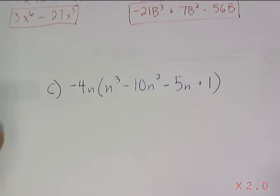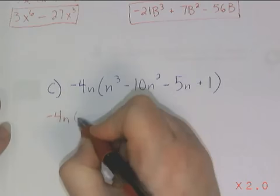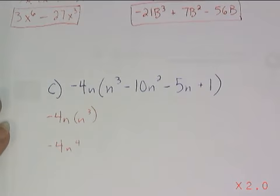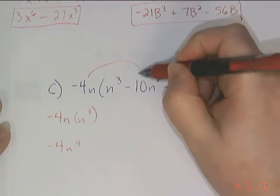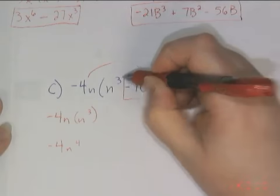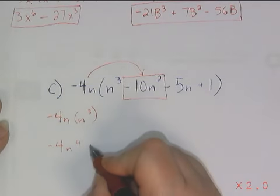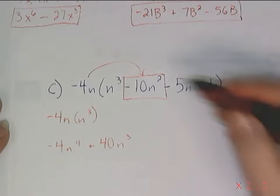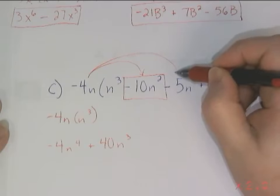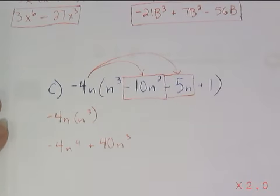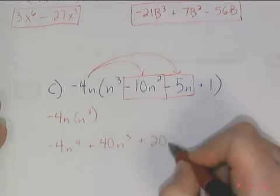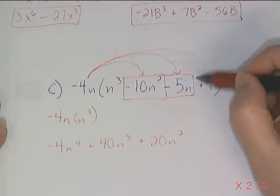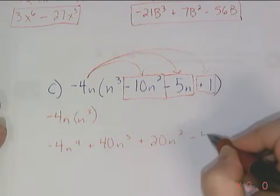Final problem. Negative 4n times n to the third power gives me negative 4n to the fourth. Multiply now by minus 10n squared — that gives me plus 40n to the third power. Multiply it times minus 5n — that gives me plus 20n squared. Multiply it times plus 1 — well, that's easy enough, that's just minus 4n.